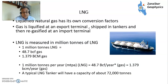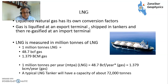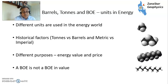Finally, liquefied natural gas has its own conversion factors. LNG is liquefied at an export terminal, shipped in tanks, then regasified at an import terminal. It tends to be measured in millions of tons of LNG. One million tons of LNG is roughly equivalent to just under 49 BCF of gas, or 1.379 billion cubic meters. One million tons of LNG per year equals 48.7 BCF per year. A typical LNG tanker has a capacity of around 72,000 tons, though sizes vary.